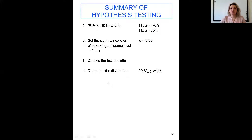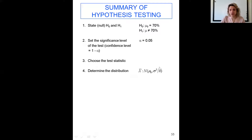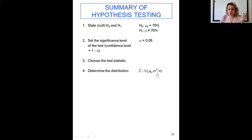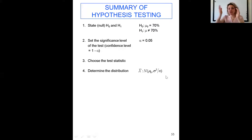After choosing the test statistic, determine the distribution. You want to make sure you have a normal distribution, and write down your mu-null and the standard error. Since we are working with the distribution of x-bar, the standard deviation of x-bar is called the standard error, which equals sigma over square root of n. When writing the normal distribution, we express it as mu and variance, so we square the standard error to get the variance of x-bar: sigma-squared over n.